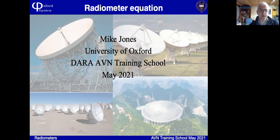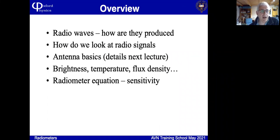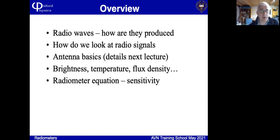In this lecture we're going to talk about the radiometer equation and some of the other fundamental concepts behind how radio telescopes work. We'll cover radio waves: what they are, how they're produced, how we look at radio signals using different kinds of hardware, a little bit about antennas, and the important concepts of brightness, brightness temperature, and flux density. Then we'll cover the radiometer equation, which is the fundamental equation of sensitivity in a radio telescope.